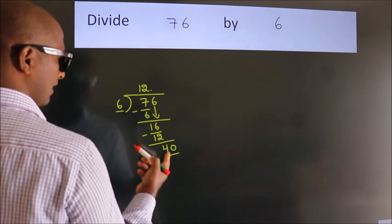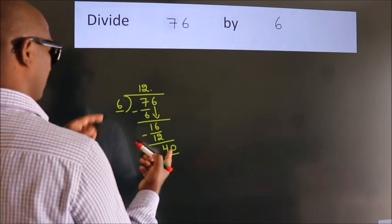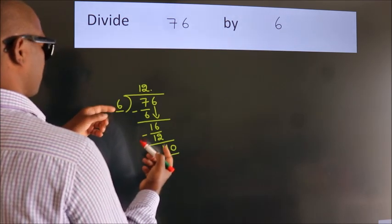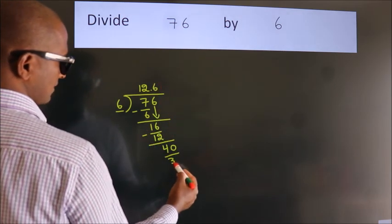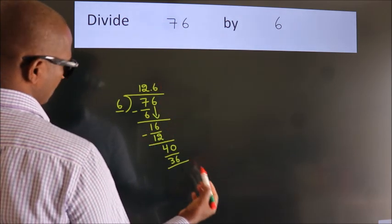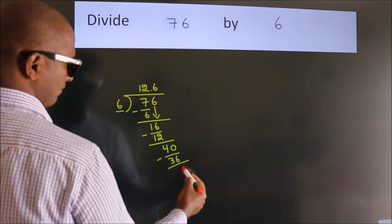So, 40. A number close to 40 in 6 table is 6 sixes, 36. Now, we subtract. We get 4.